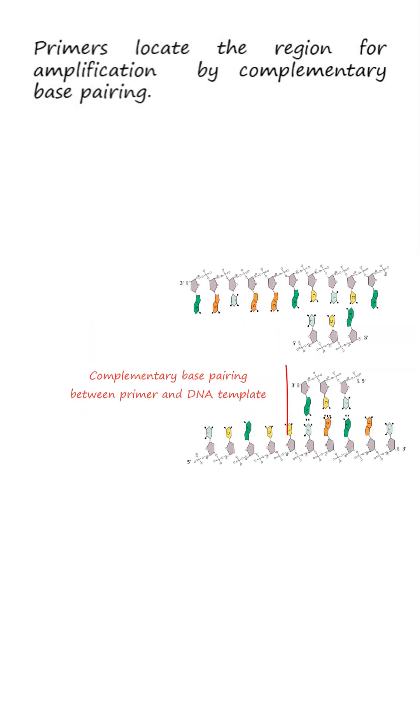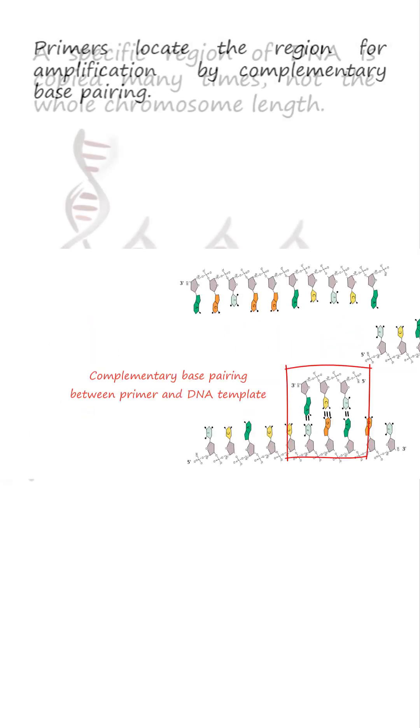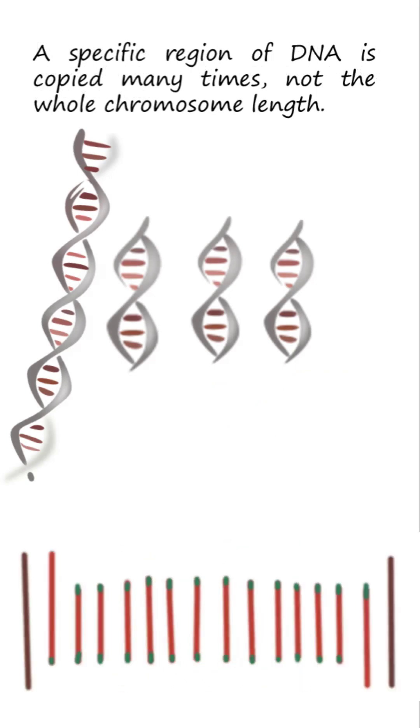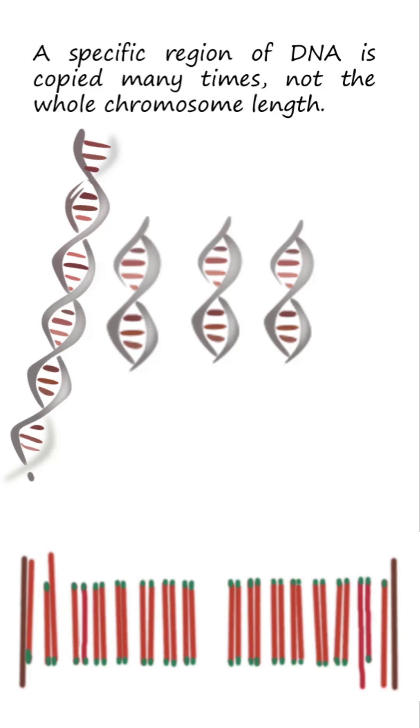Primers locate the region for amplification by complementary base pairing. Only a region of about 1,000 base pairs is amplified, as the whole chromosome is too long to be amplified in a single reaction.